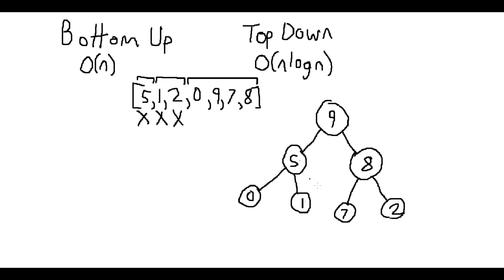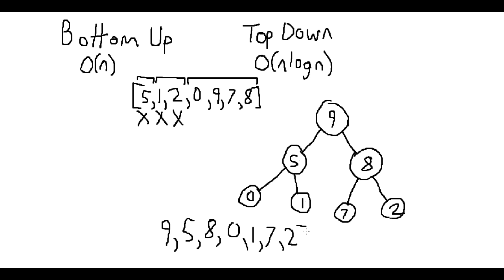We can confirm the heap order: 9 is greater than 5 and 8, 5 is greater than 0 and 1, and 8 is greater than 7 and 2. Converting back into the array, we get 9, 5, 8, 0, 1, 7, 2 as our order. Looking at the question options, 9, 5, 8, 0, 1, 7, 2 is option E. If a computer was doing this instead of us, it would be O(n) time to complete this — O(n) where n is the 7 elements we have here.